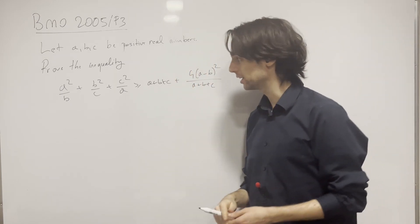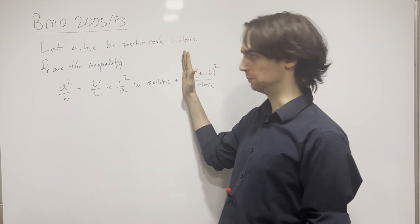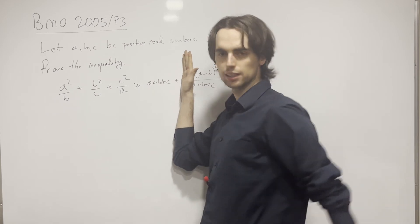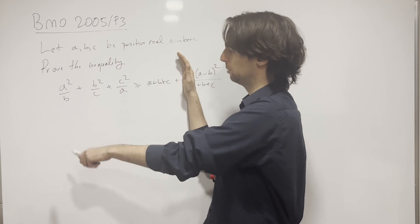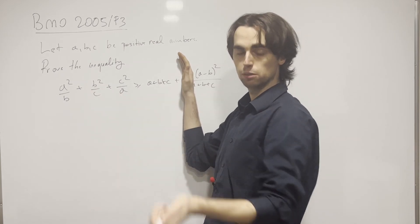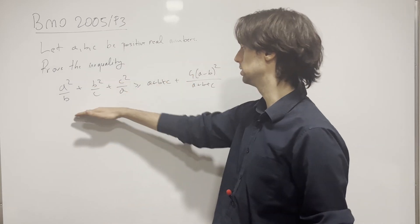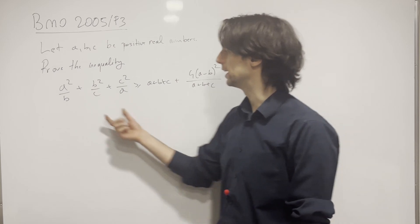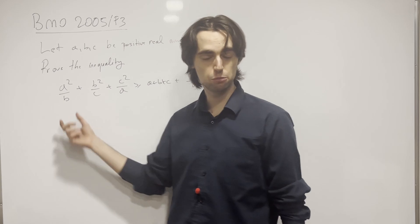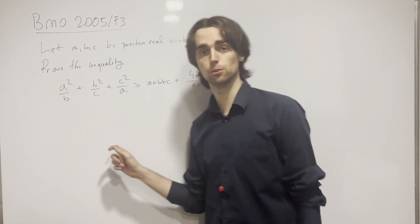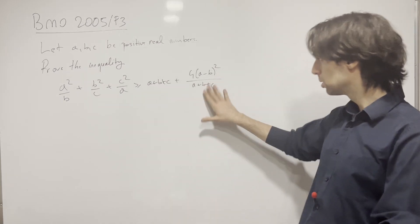The first thing I want to do is show we can prove this inequality quickly without the 4(a−b)²/(a+b+c) term. Because we can do a lot of things: one is Cauchy-Schwarz — this times a times (b+c+a) is going to be greater than (a+b+c)², and then dividing by (a+b+c) gives what we need. Alternatively, you can add b, c, and a on both sides and do AM-GM: a²/b ≥ 2a and so on, add them up and you're done. But with the extra term, how are you going to deal with that?